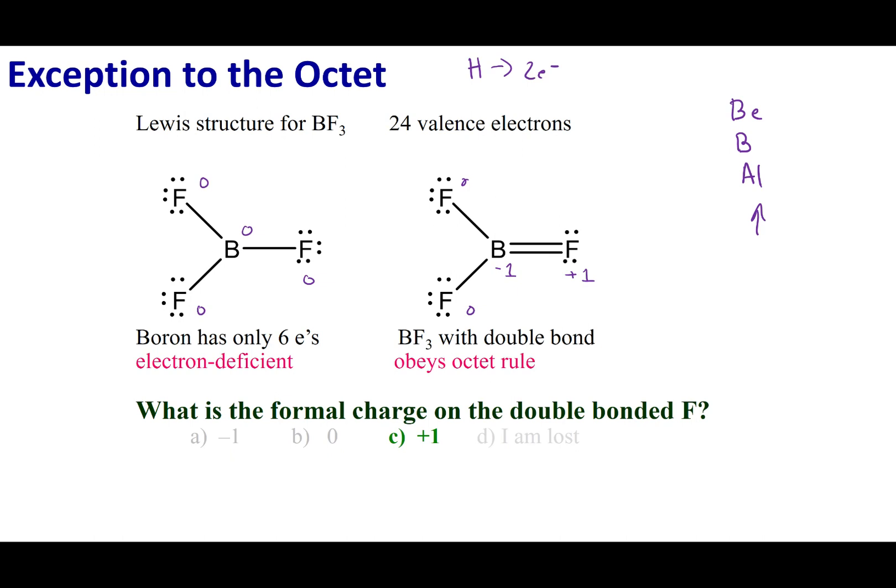What I want you to understand about going electron deficient with these three atoms: this isn't the default choice. You're only going to invoke this deficiency or breaking of the octet if it minimizes formal charge.